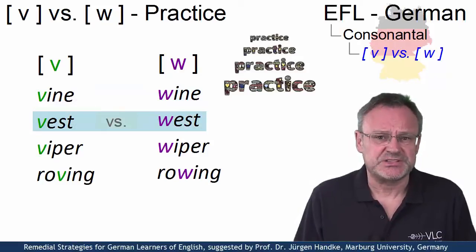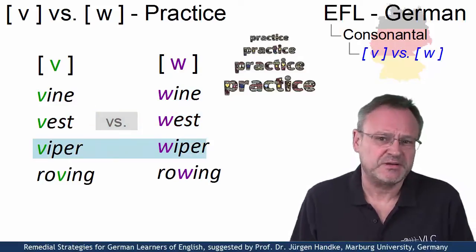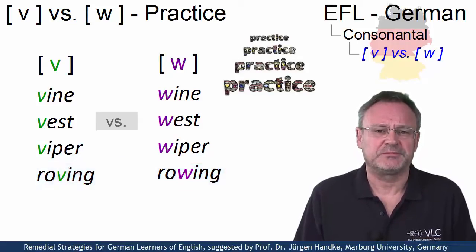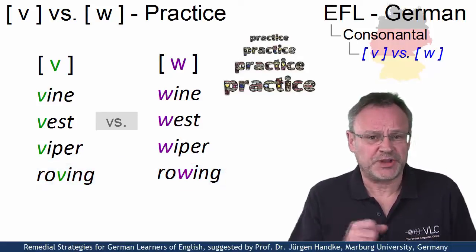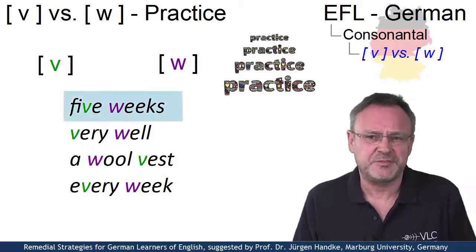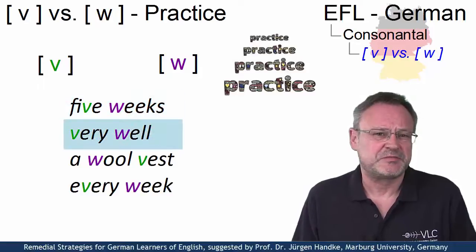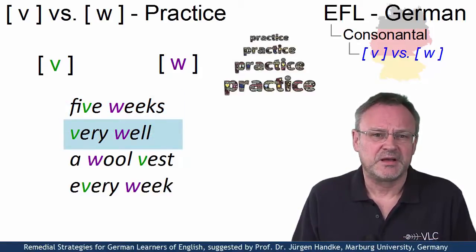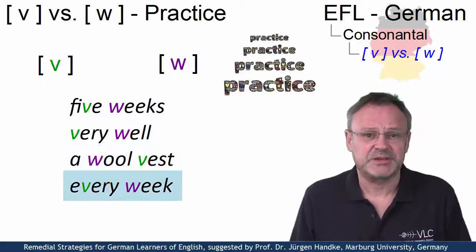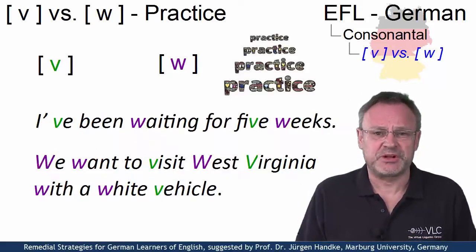Now try some phrases that contain both sounds: five weeks, very well, a wool vest, every week. And finally, pronounce these sentences: I've been waiting for five weeks. We want to visit West Virginia with a white vehicle.